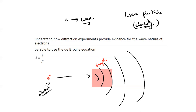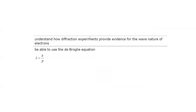Wave-particle duality means that something which is a particle can behave like a wave, and something which is a wave can behave like a particle. The evidence here is electron diffraction: the electron diffracts when passing through the crystal, rather than passing straight, bouncing back, or deviating — which is what a pure particle would do.